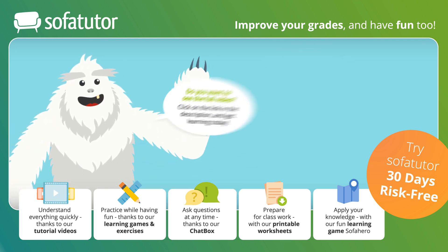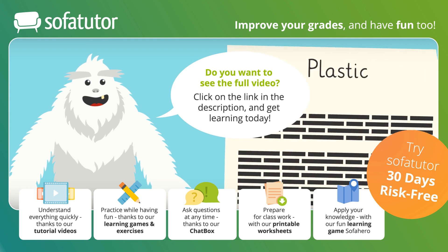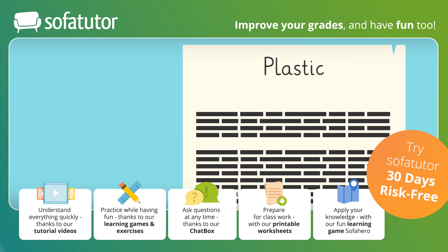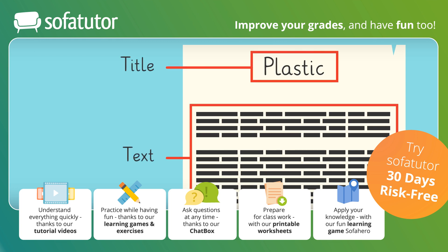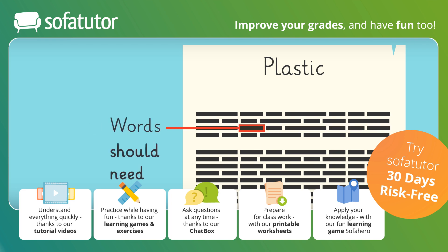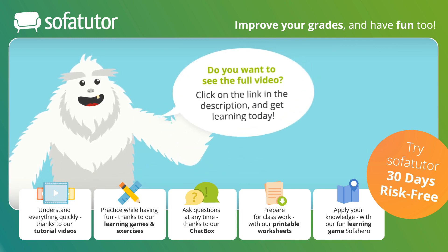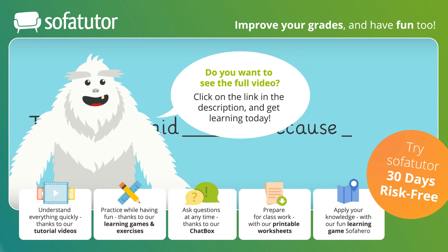First, we need to identify or find their purpose for writing. You can find the author's purpose for writing by reading the title and text. Then, look for sentences that support the idea or purpose while reading. You can do this by finding words like should, need, or good and bad.